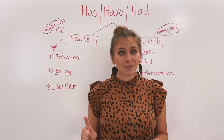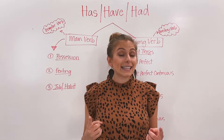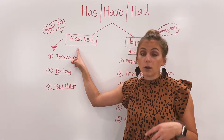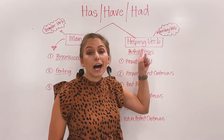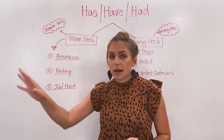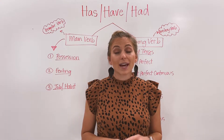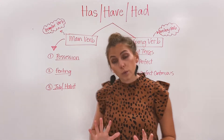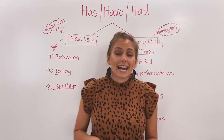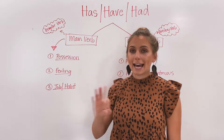The first thing you need to remember that helps understand this verb is that it can have two purposes. It can be a main verb or it can be a helping verb. That is very important because depending on how we use it, it's going to look different in each sentence. So first we're going to start with the main verb. When using it as a main verb, there are three ways we can use has, have, and had.